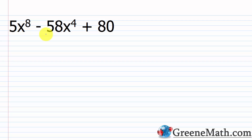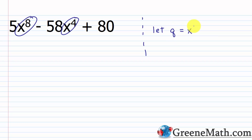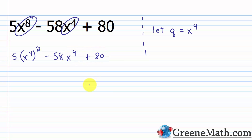Next we have 5x to the eighth power minus 58x to the fourth power plus 80. We see x to the fourth power and x to the eighth power — the eighth is double the fourth — so I let q equal x to the fourth power. I rewrite the expression as 5 times (x to the fourth power) squared minus 58x to the fourth power plus 80, then substitute q to get 5q squared minus 58q plus 80.